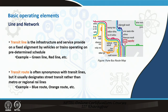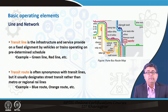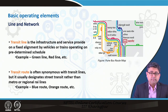The first and basic terminology in any public transportation system is what is called a transit line. We all have taken several public transportation systems across different cities and we always know that there is a public transportation line which we need to take. A transit line is the infrastructure and service provided on a fixed alignment by vehicles or trains operating on a predetermined schedule and on a fixed alignment.